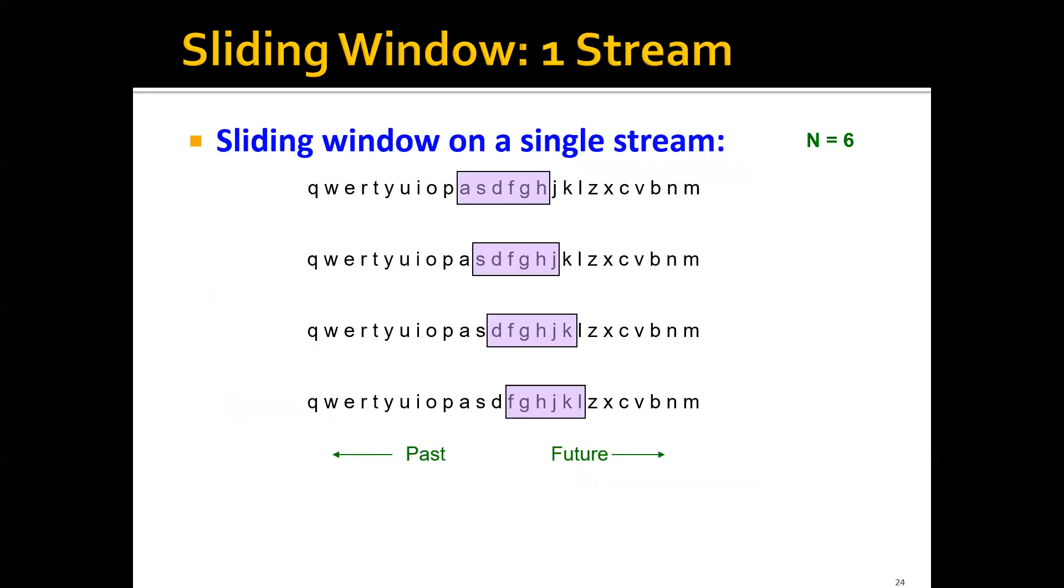For example, let's say we have this sliding window and this data stream. Then as time goes by, the sliding window will gradually move from the past to the future and the queries would only be related to the content inside this window.